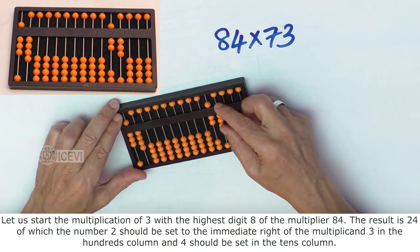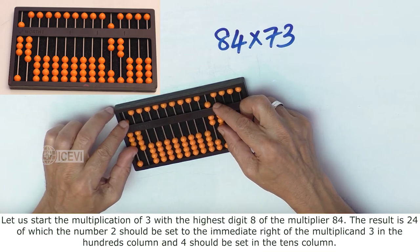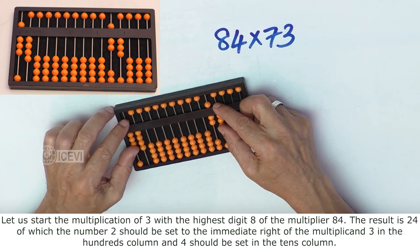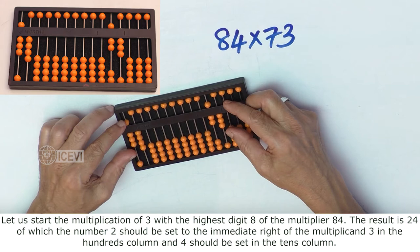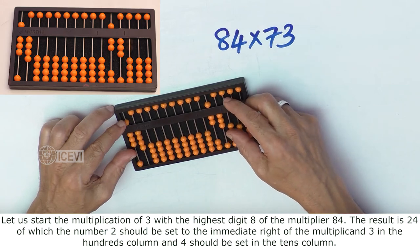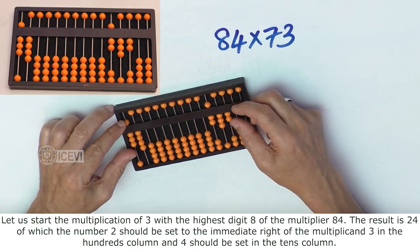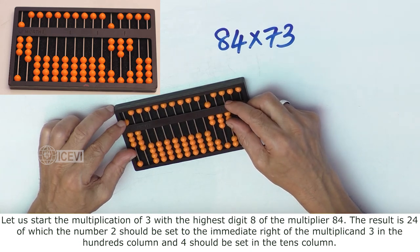Let us start the multiplication of 3 with the highest digit 8 of the multiplier 84. The result is 24, of which the number 2 should be set in the immediate right of the multiplicand 3 in the 100th column.